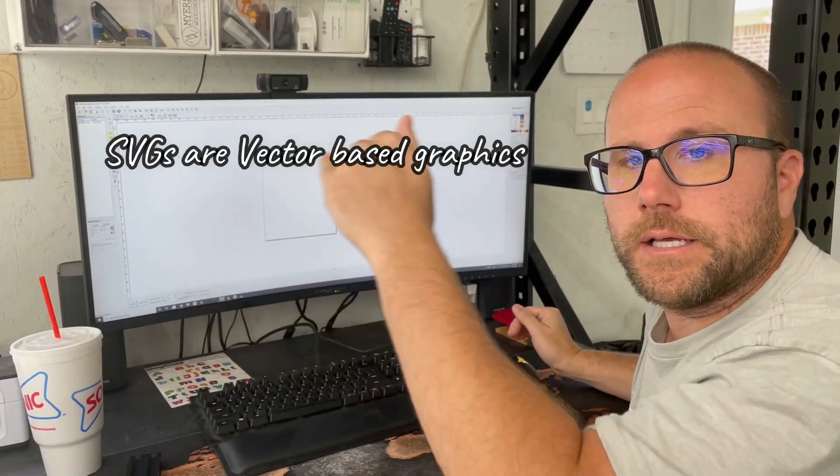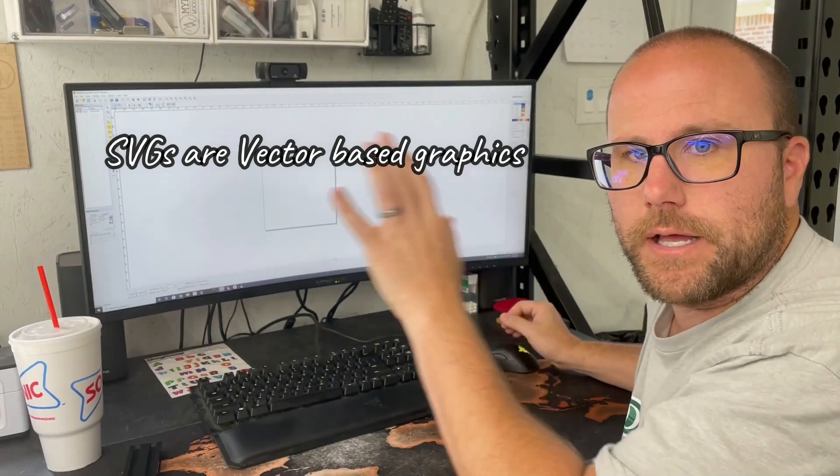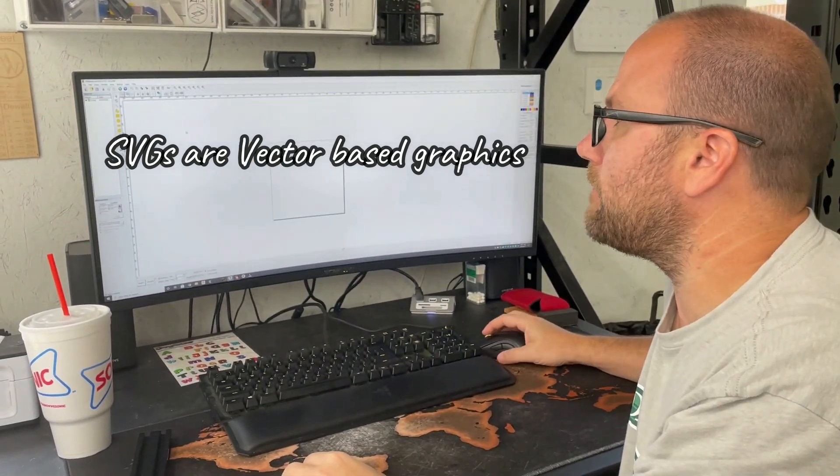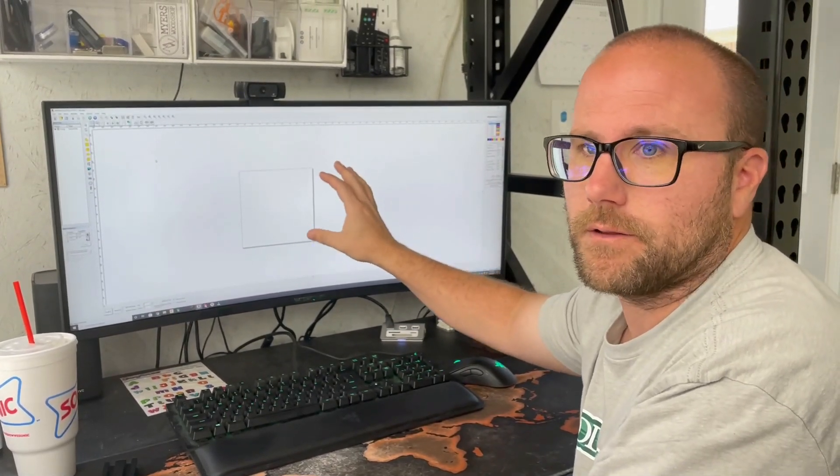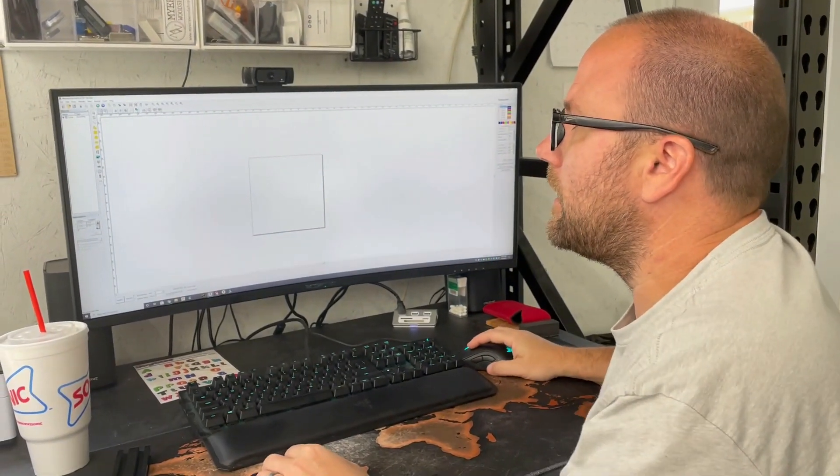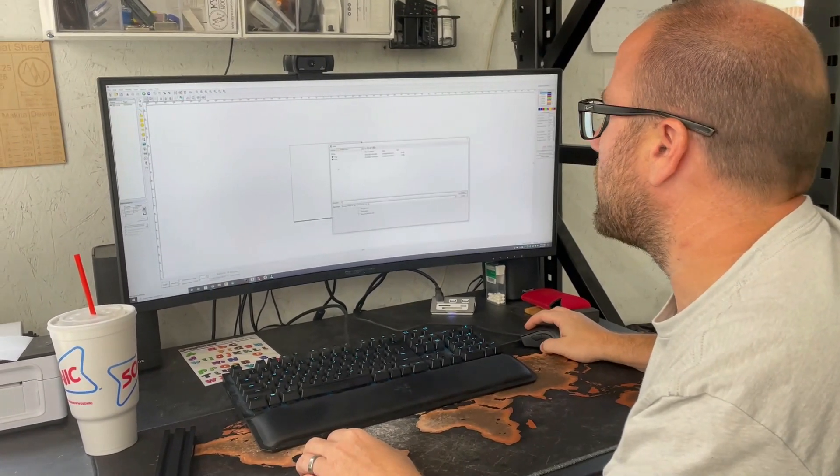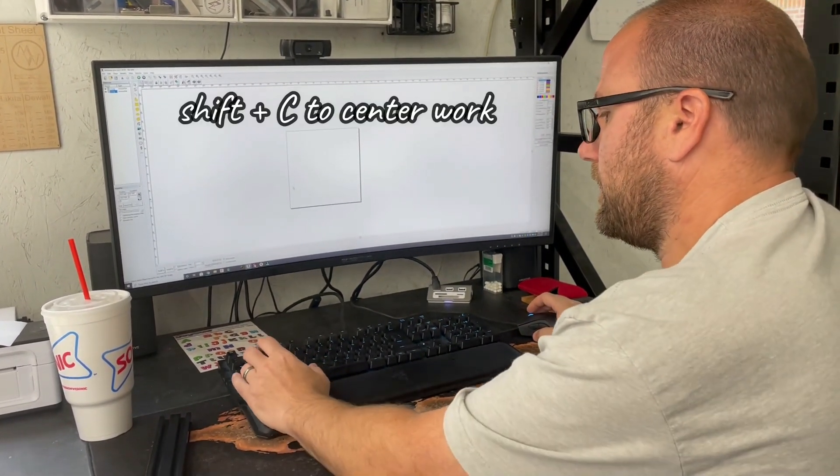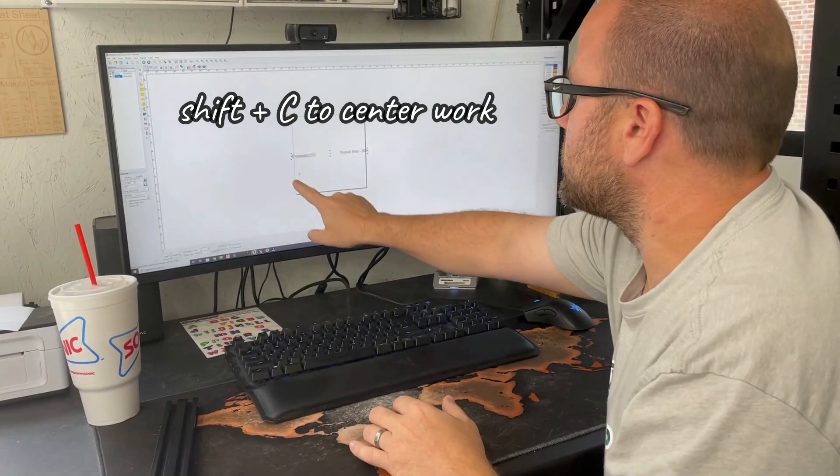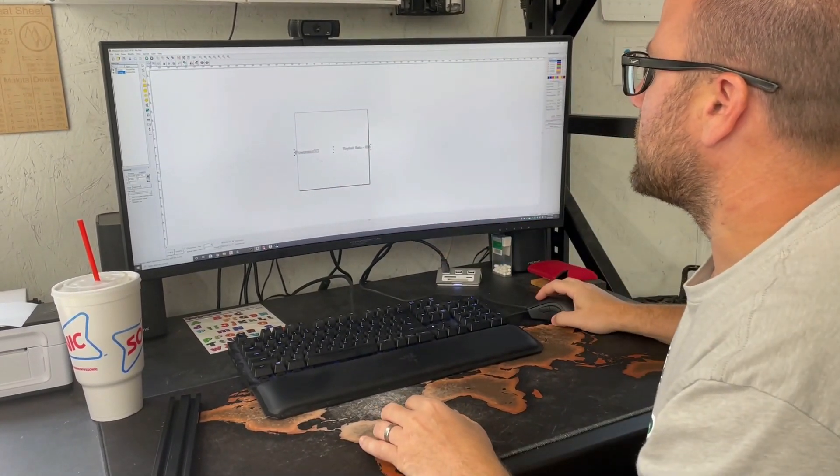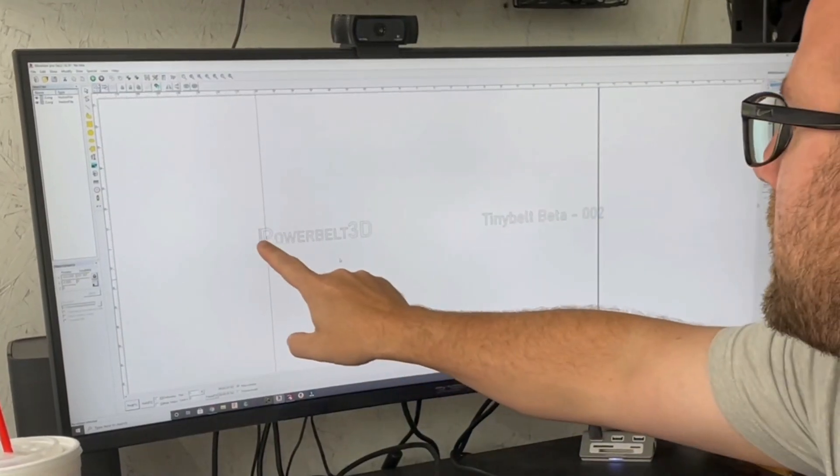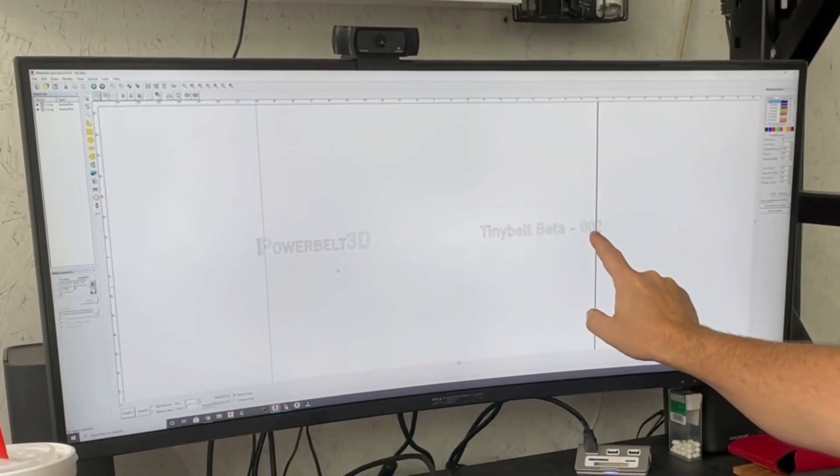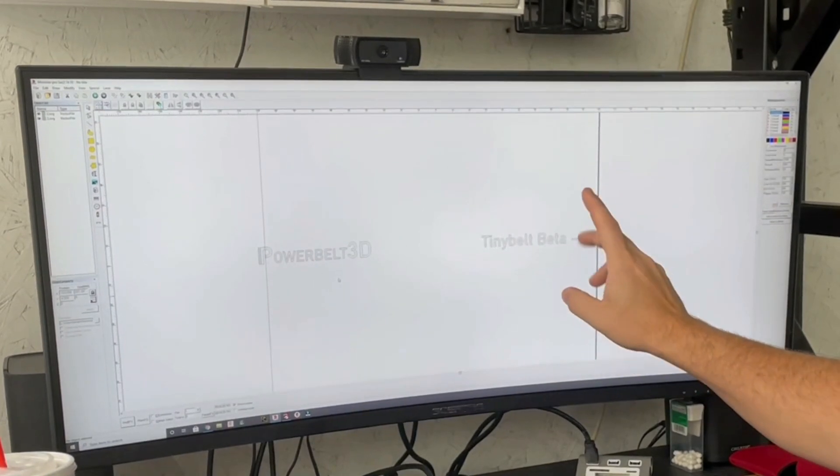What I'm going to do is I'm going to bring in an SVG that was created in a different program, although you can create SVGs in this. It's just a really hard and terrible program to do it in. And we're going to load the file. So I'm just going to import that SVG. I'm going to center it on my work bed. This is the work bed here, and we can see that if I zoom in, here's what it's going to say. Power Belt 3D, Tiny Belt Beta. This is beta number two.